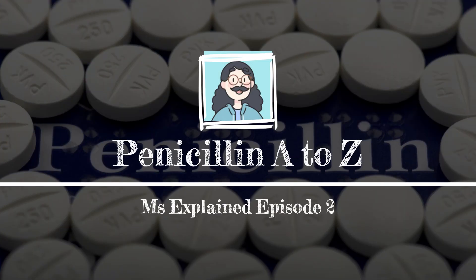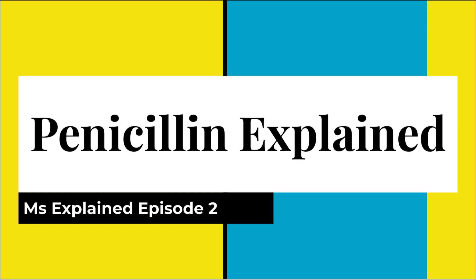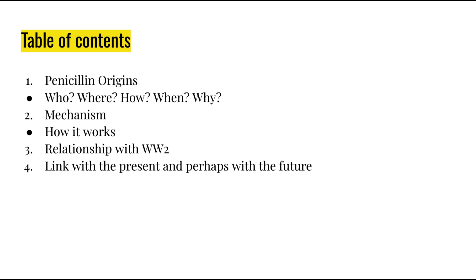Hello, and welcome to the second episode of the Miss Explained series. Today we're going to talk about penicillin A to Z. The content we're going to cover is as follows: first, the origins of penicillin — who discovered it, where, how, when, why; second, its mechanism and how it actually works; third, its connection with World War II; and fourth, linking it to the present and perhaps the future.